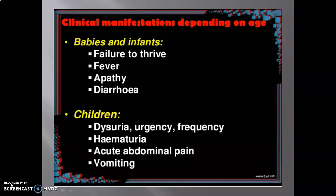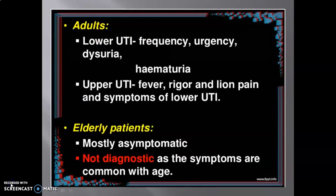Clinical manifestation by age: In babies and infants, failure to thrive, fever, apathy, and diarrhea are seen. In children, dysuria, urgency, frequency, hematuria, acute abdominal pain, and vomiting are seen. In adults, lower UTI presents with frequency, urgency, dysuria, and hematuria; upper UTI presents with fever, rigors, loin pain, and symptoms of lower UTI.